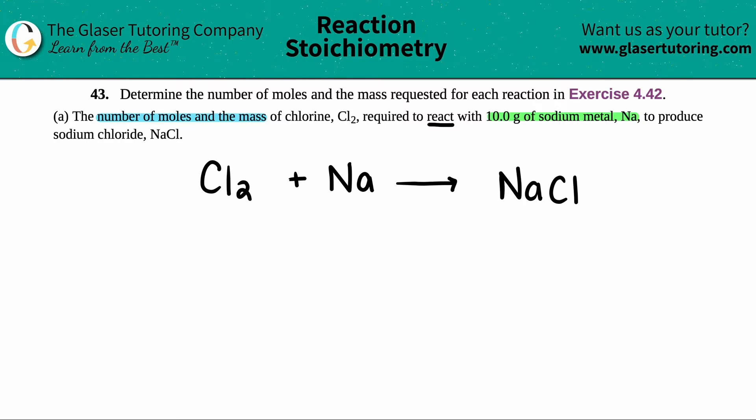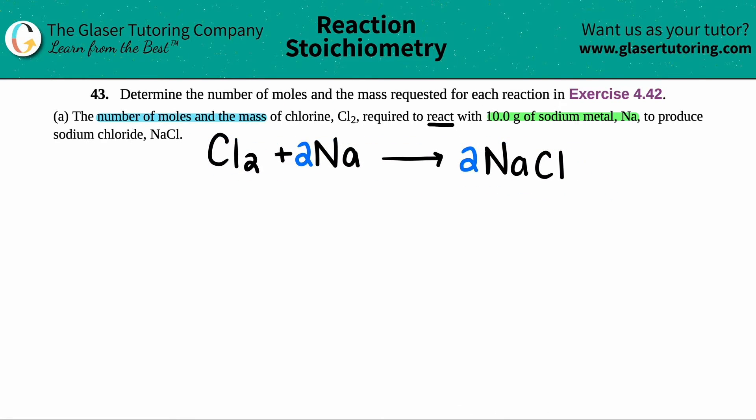Now, before we even move on, we need to make sure that this is balanced. Yes, we wrote an equation, but you always got to make sure that you balanced it. So this is just going to be a quick review. It looks like I have two chlorines on my left-hand side, but I only have one chlorine, so I'm going to have to put a two in front of here, and then I have two sodiums, so I have to put a two here, and I'm finally done with balancing.